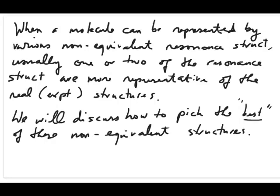In this video, we're going to continue our discussion on non-equivalent resonance structures. The issue that we closed the previous video with was the idea that if a molecule can be represented by many non-equivalent resonance structures, which of the resonance structures would be the best one?